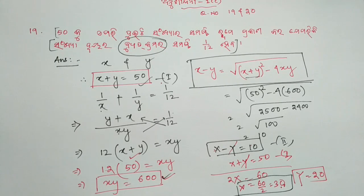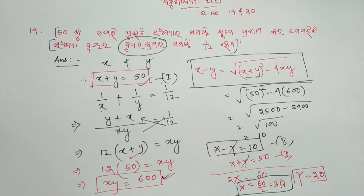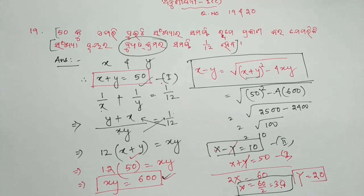x is 60 by 2, x is 30. Now we can solve: x is 30. So this is the most important question. If you have any questions, drop them in the comment section. I will quickly ask the next question, which is the last question — question number 20.